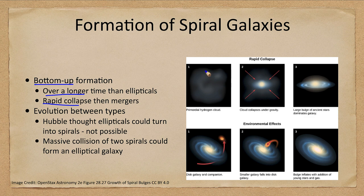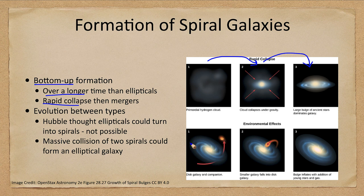We have a very rapid collapse from a hydrogen cloud which collapses under gravity, and then the ancient stars dominate. The spiral arms can be built up by companion galaxies through gravitational interactions, which cause more star formation and highlight those spiral arms.